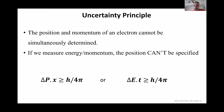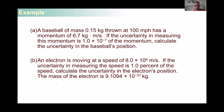Bohr's model was successful, however it violated a very basic physical principle: the uncertainty principle. In short, you cannot determine the position and the momentum of the electron inside the atom simultaneously with the same accuracy. Mathematically, the uncertainty in momentum times the uncertainty in position are inversely proportional to each other.